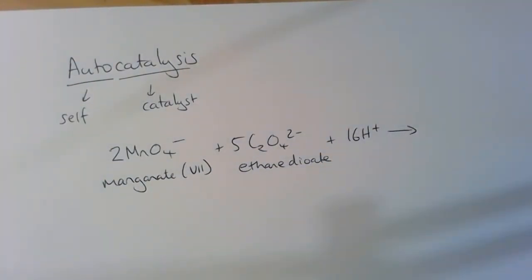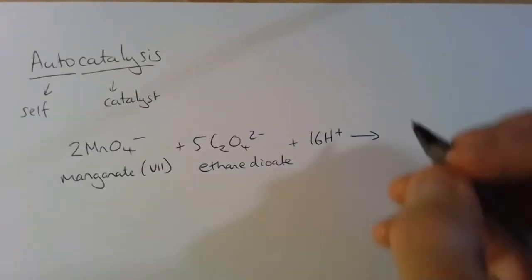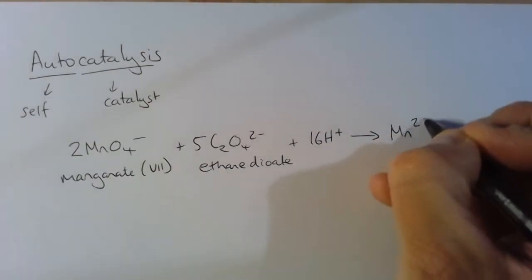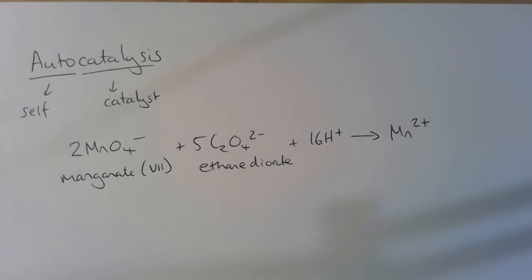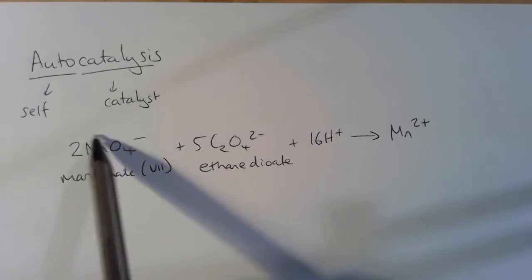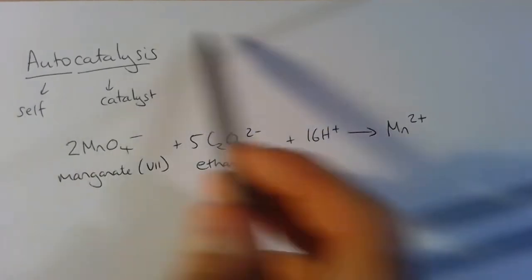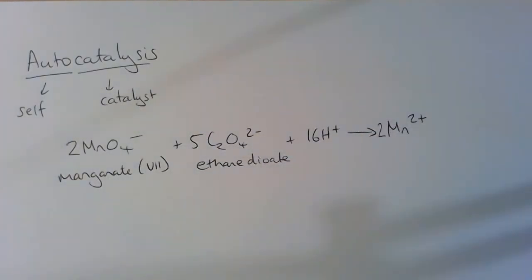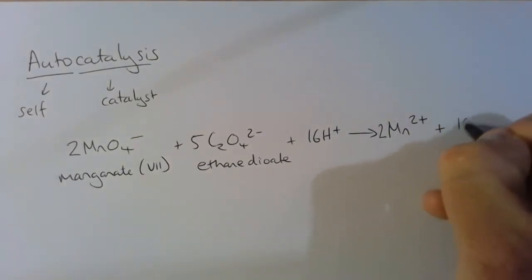So this reaction produces Mn²⁺, manganese 2+, which is produced when the manganate, the manganese 7 in the manganate ion, is reduced to manganese 2+. It also produces 10 CO₂ molecules.